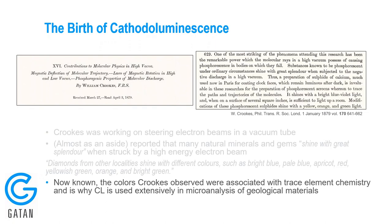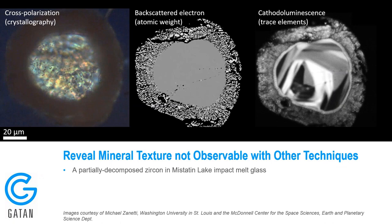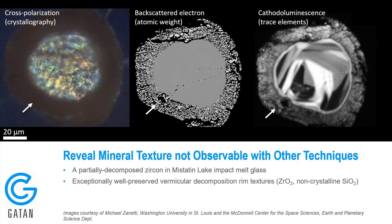Crookes didn't really know what the mechanism for this light emission was — he simply noted it as an observation. But it's now known that those colors were associated with crystal chemistry, particularly trace elements. And it's this insight into trace element chemistry which means that CL is used extensively as a microanalysis tool in geological materials. This analysis of trace elements really gives us insights that are difficult to get with other techniques.